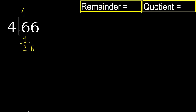Next: 26. 4 multiplied by 7 is 28 — that is greater. 4 multiplied by 6 is 24. 26 minus 24 is 2.